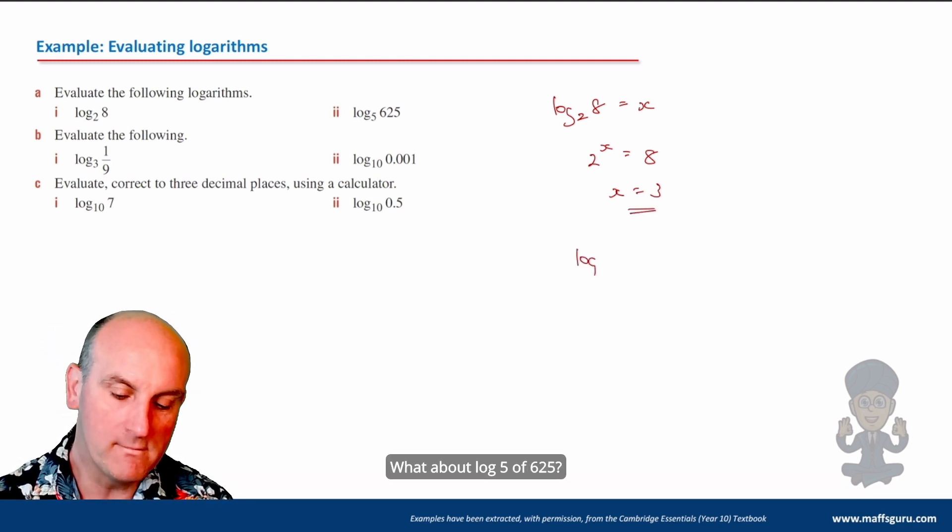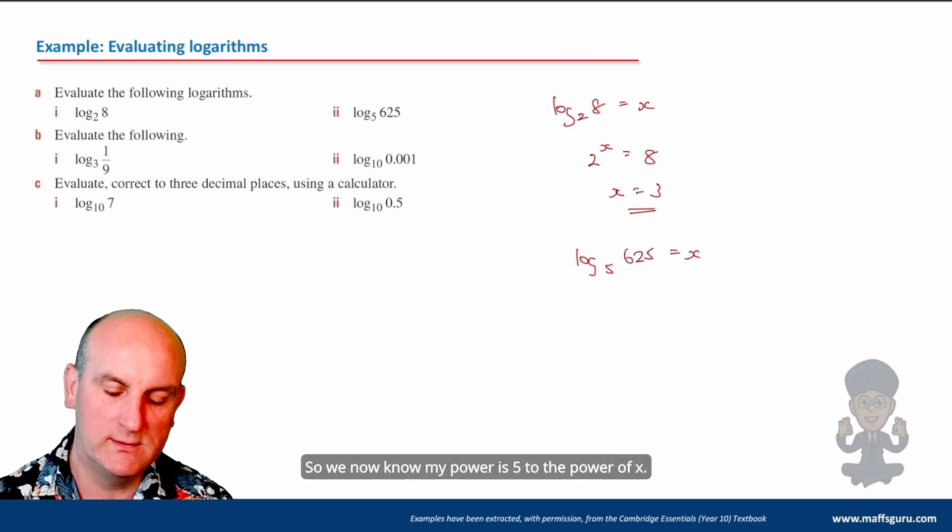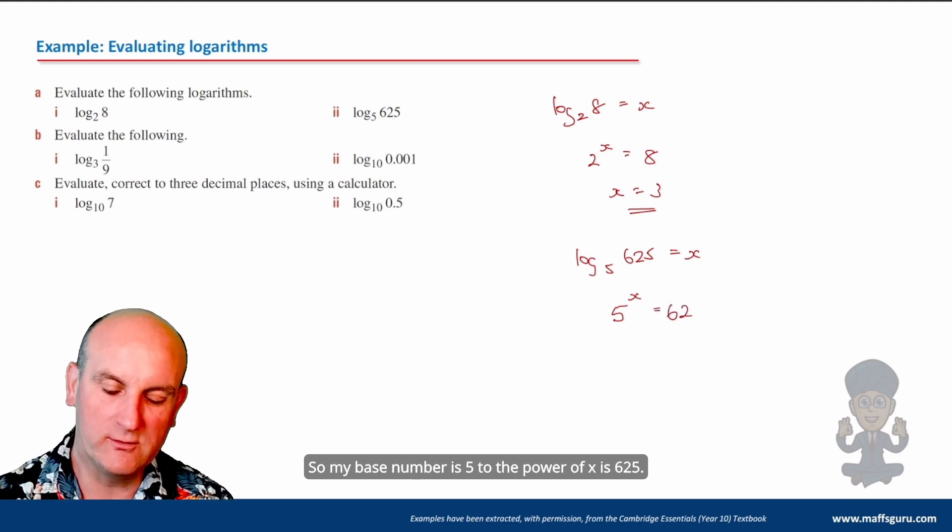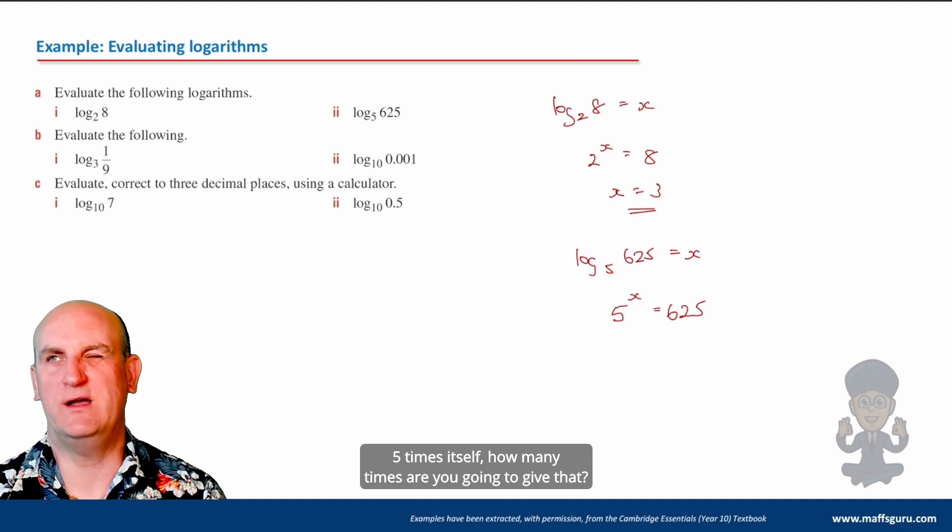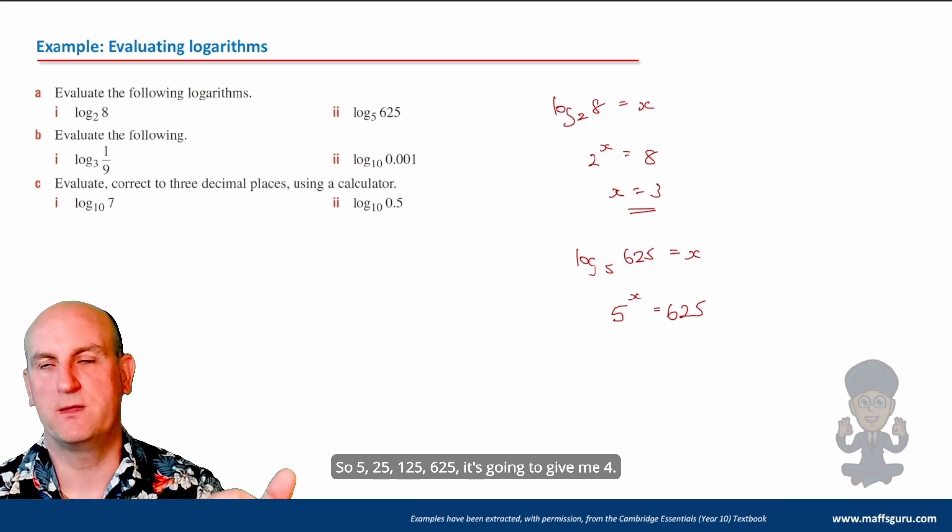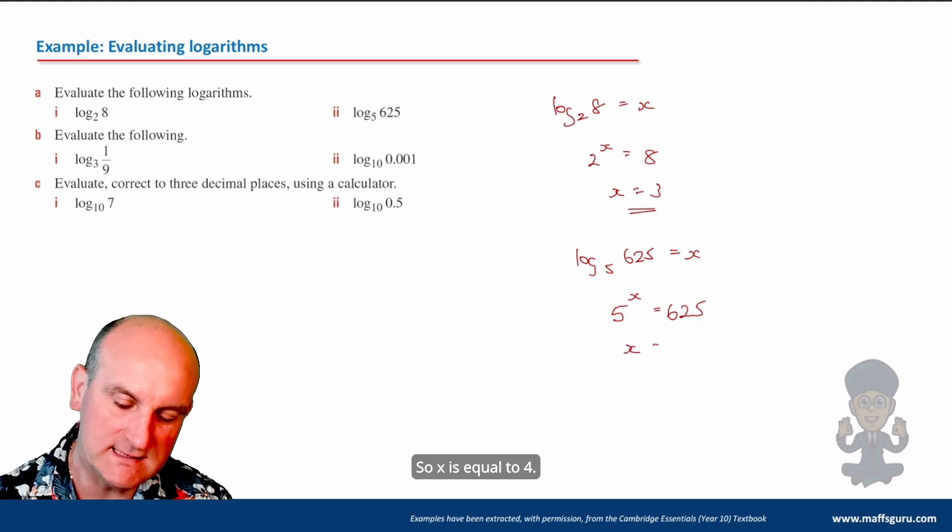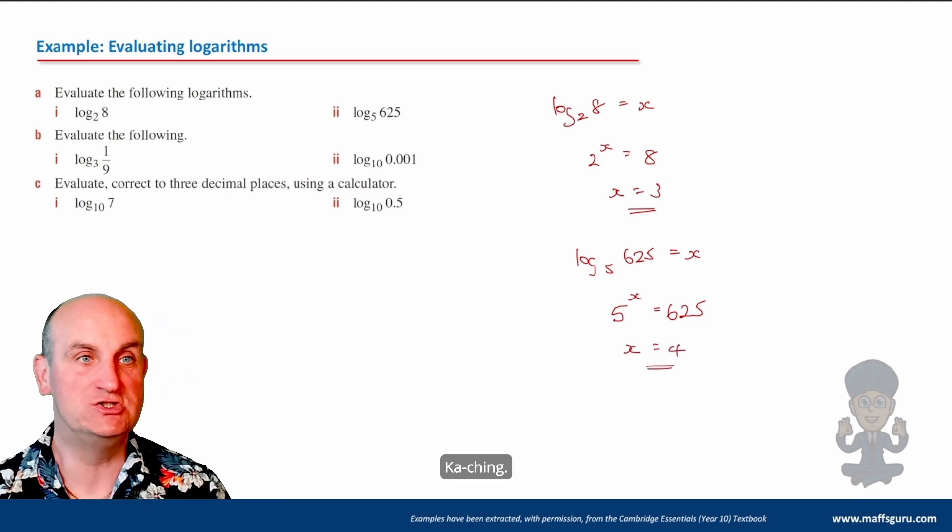What about log 5 of 625? We're going to write that equal to x. So we now know my base number is 5 to the power of x is 625. 5 times itself, how many times you can give that. So 5, 25, 125, 625. It's going to give me 4. So x is equal to 4.